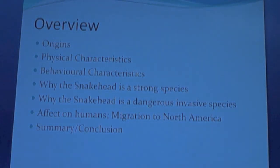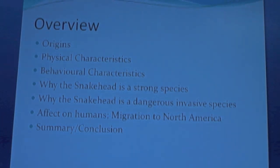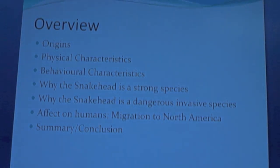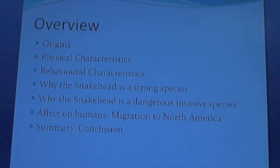Overview: Origins — where the snakehead came from. Physical characteristics — what makes them unique. Behavioral characteristics — why is the snakehead a strong species? Why is the snakehead a dangerous invasive species? Effect on humans. Migration to North America. Summary and Conclusion.